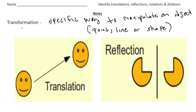Anytime you hear the word transformations, realize that there are different types of transformations. I'm going to give you a keyword for four different kinds. The first kind is called a translation.